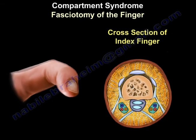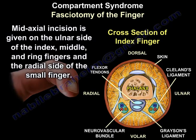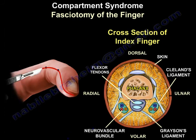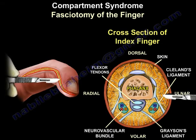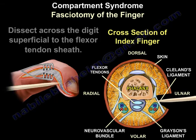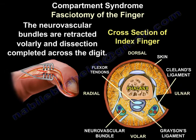Fasciotomy of the finger. A mid-axial incision is given on the ulnar side of the index, middle, and ring fingers and the radial side of the small finger. Dissect across the digit superficial to the flexor tendon sheath. The neurovascular bundles are retracted volarly and dissection completed across the digit.